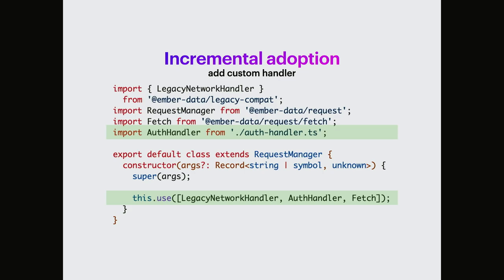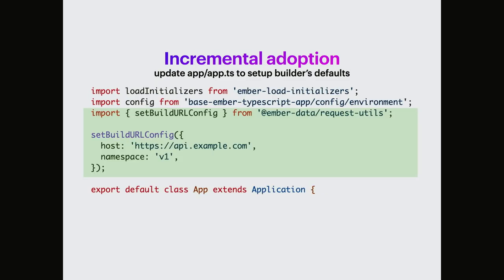In the Ember data repository we now have a guide with a detailed section about authorization — how to deal with it. Feel free to take a look later. To use the auth handler, all you need to do is configure the handler pipeline. First and foremost you will have the legacy network handler, which takes care of all previous old-style requests. The legacy network handler does nothing for new requests using the request manager and builders. So you kick in the pipeline of handlers: the auth handler comes first, then fetch. Every request made using the new APIs would have the authorization header attached. To set up defaults for every builder, you can use the utility from Ember data request utils — set build URL config. We recommend putting it in application.js where you can just set host and namespace. And that's it. Pretty simple. So if you're on the semi-latest version of Ember data, you can start adoption today.